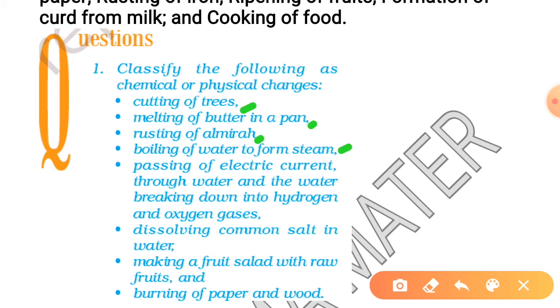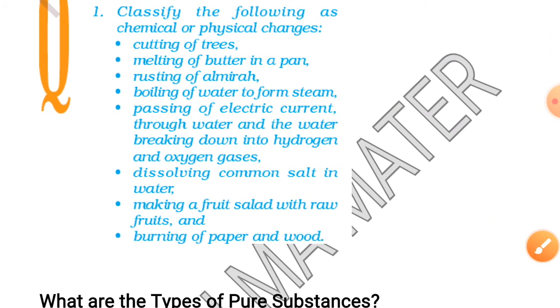Passing of electric current through water and water breaking down into hydrogen and oxygen gas. The statement itself suggests that a chemical reaction is occurring. This is the chemical effect of electric current. That's why this is chemical change. Next one is dissolving common salt in water. As I told you, mixing two things to prepare a solution is a physical change.